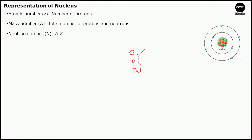The first one is the atomic number — the number of protons that a nucleus has. The second term is the mass number — the total number of protons and neutrons that a nucleus has. To represent a nucleus X, we write the atomic number in the lower subscript, while we write the mass number in the upper subscript. X is the symbolic representation of the element.